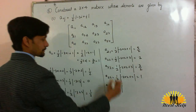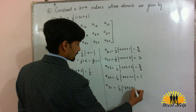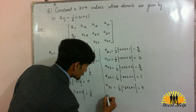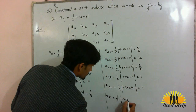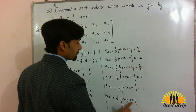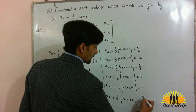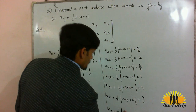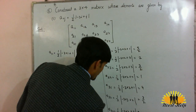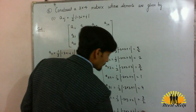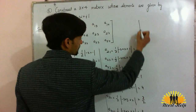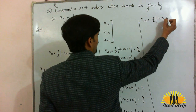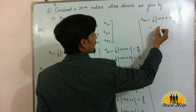Now take the elements of the 3rd row. A31: minus 9 plus 1 equals minus 8, absolute value of 8 divided by 2 is 4. A32: minus 9 plus 2 equals minus 7, absolute value of 7 divided by 2 is 7/2. A33: minus 9 plus 3 equals minus 6, absolute value of 6 divided by 2 is 3. A34: minus 9 plus 4 equals minus 5, absolute value of 5 divided by 2 is 5/2.